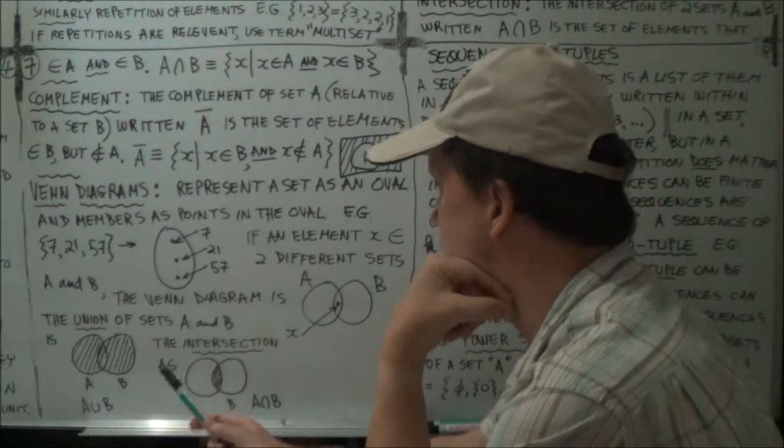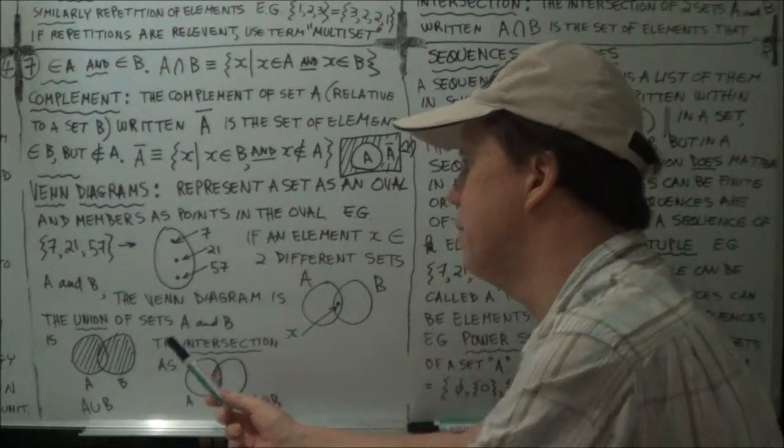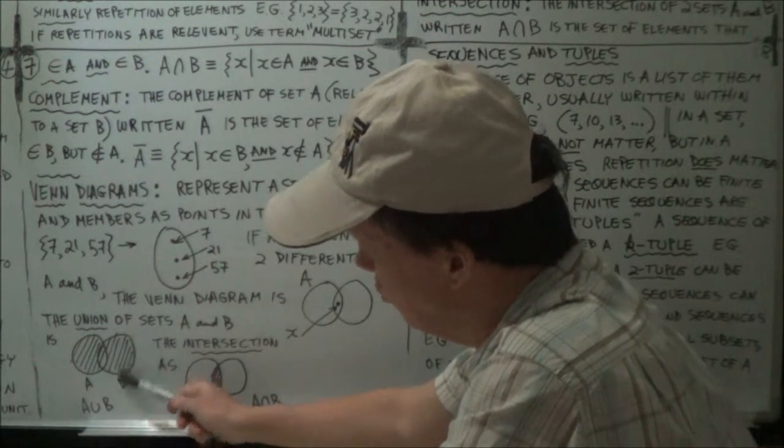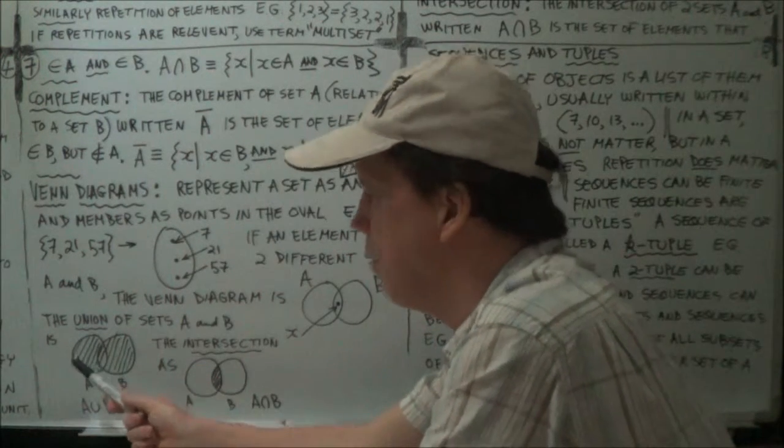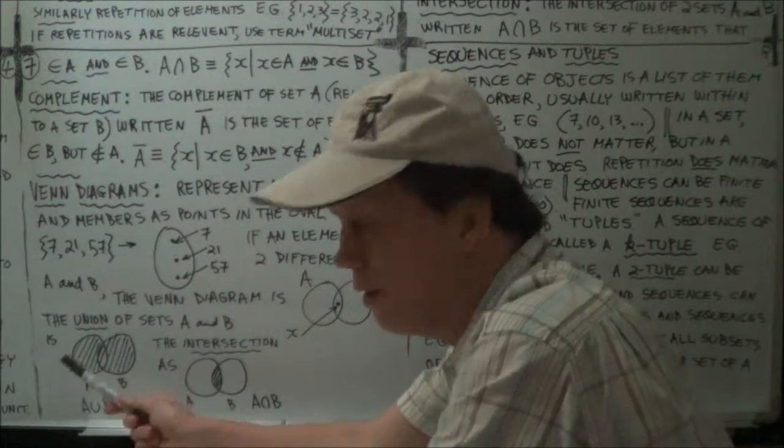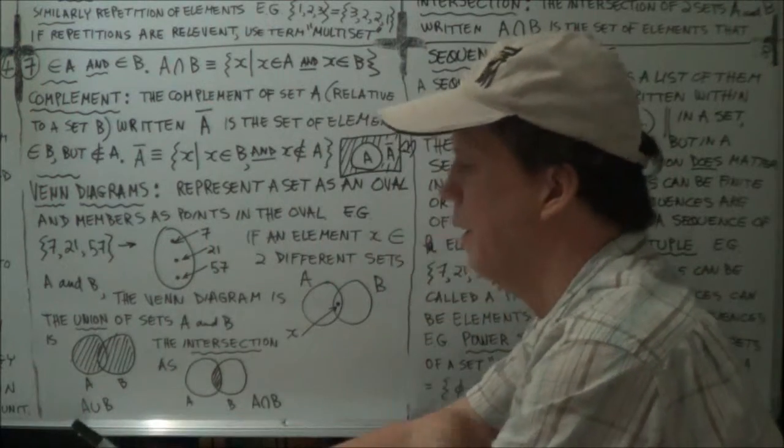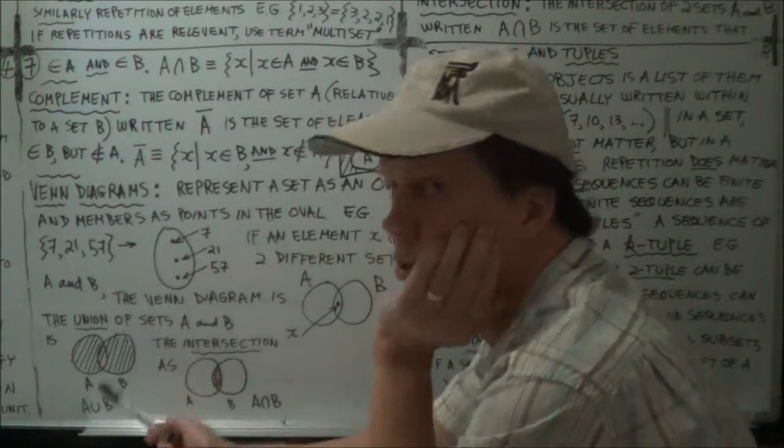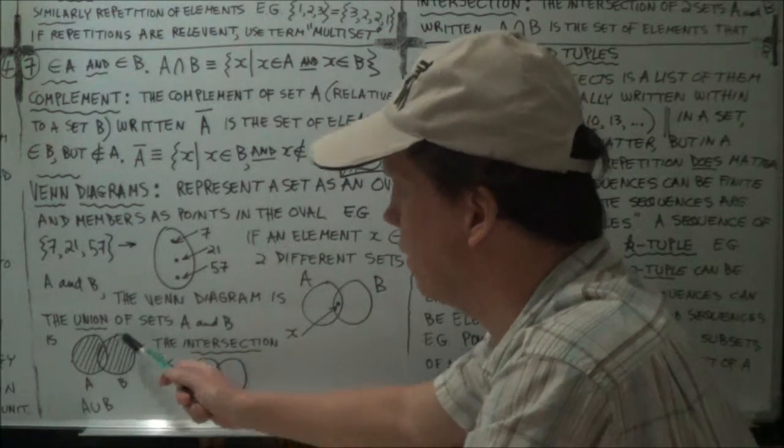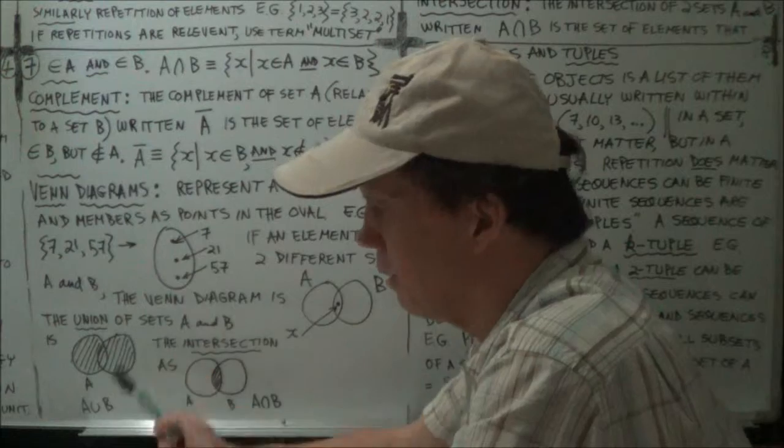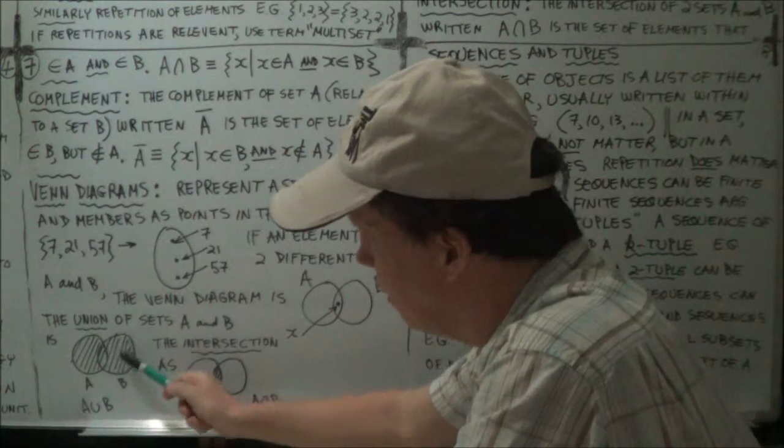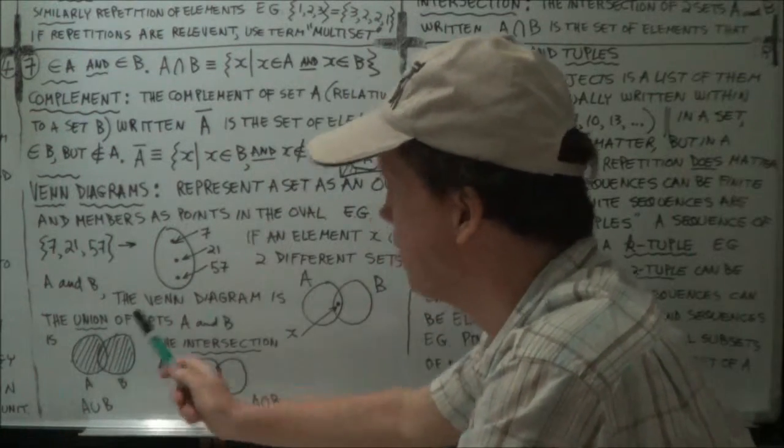And the union of two sets A and B, you represent by dashes, you know, strokes like this. So that would mean all the dots in these three areas, this area, the middle area, this area, all those dots belong to the union of A and B. So you represent the union of two sets by striping in the whole area, the whole figure of eight, so to speak.